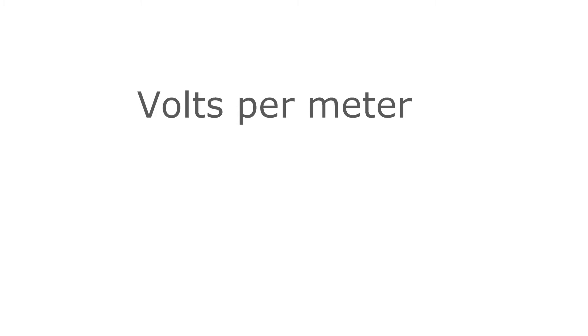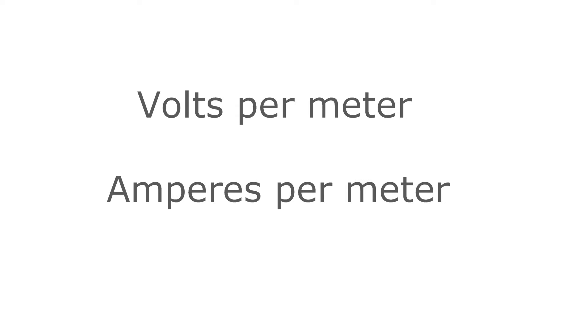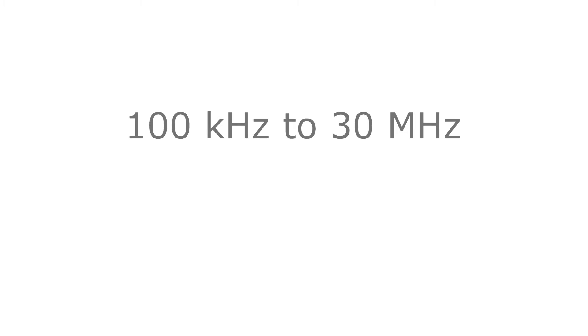So, how do we accomplish this? Radiated emissions are determined by measuring the electrical and magnetic field strength of the outgoing radiation. Electrical field strength is measured in volts per meter, and magnetic field strength is measured in amps per meter. Measurements of conducted interference are normally taken over a frequency range of 100 kilohertz to 30 megahertz.